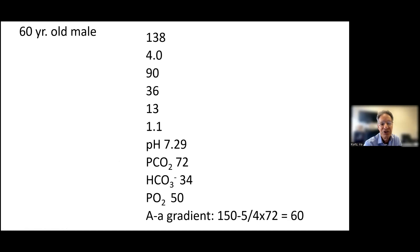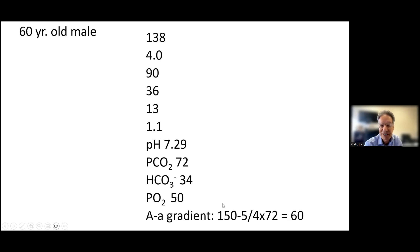When you get blood gases, you should always calculate the A-gradient, because it gives you additional information as to whether you have parenchymal lung disease, a V/Q abnormality, or a shunt. The A-gradient on room air is 150 mmHg minus five-quarters of the PCO2. This gives you the PO2 in the alveoli. Then you subtract the PO2 in the blood to get the A-gradient. It should be around 10; if it's 20, 30, or 40, you know something is going on in the lungs.